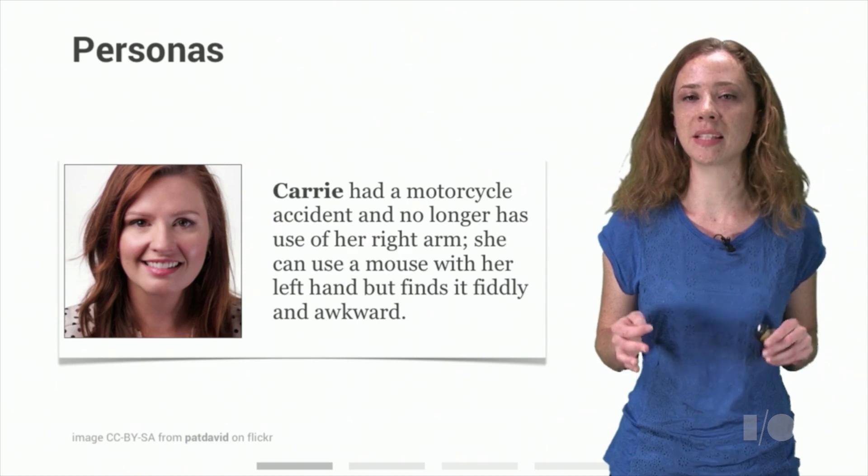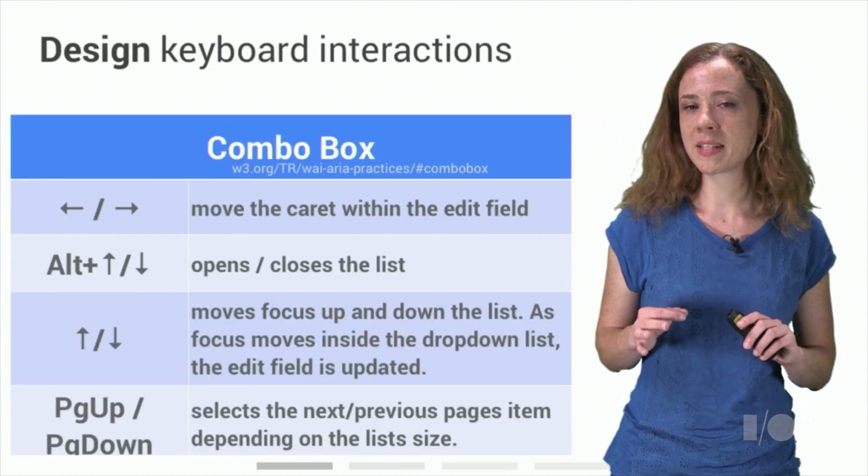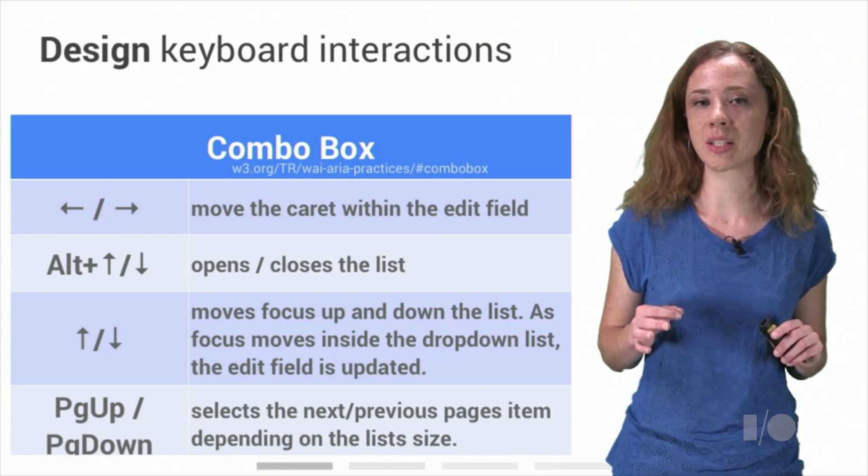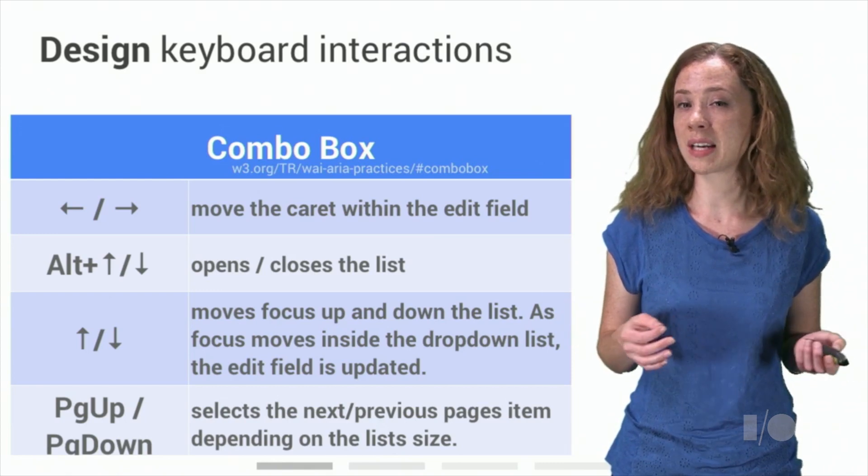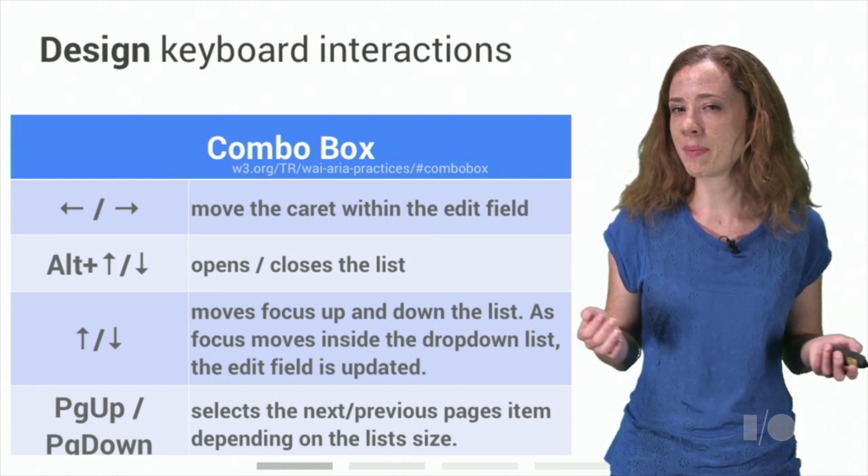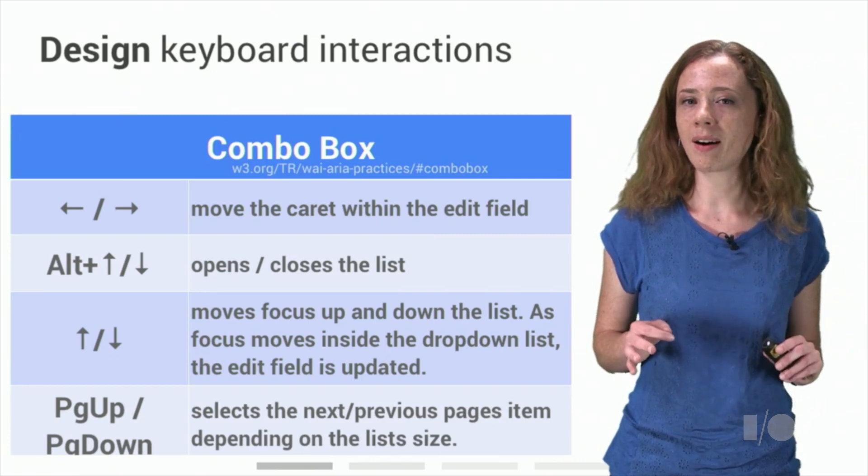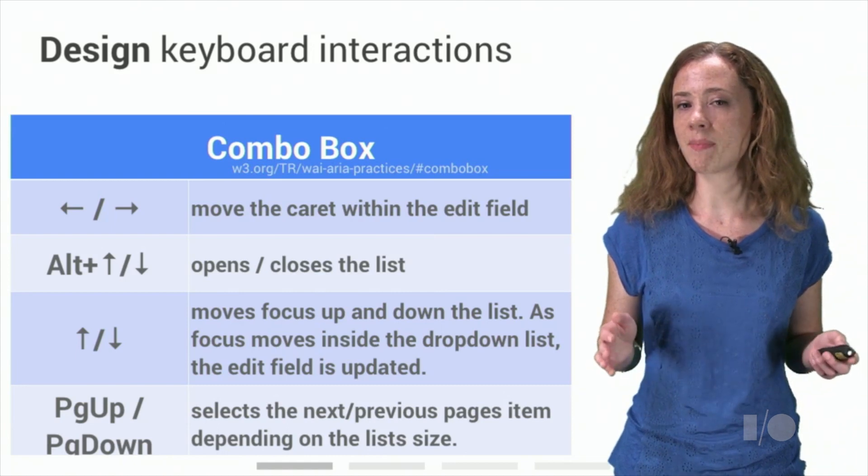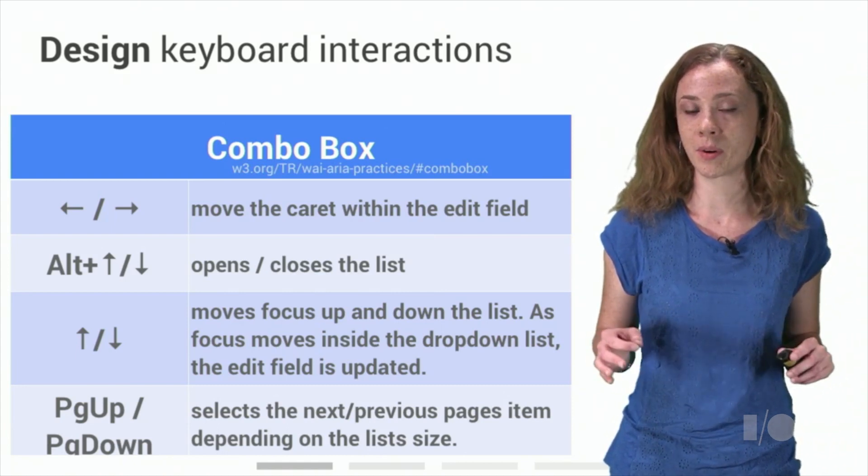To help with the design process, consider including physical impairments in your user experience personas. If you're creating an element which mimics an existing element in some way, consider copying the way it handles keyboard interaction to provide consistency. Try using a native element with the keyboard and find out what already works. Chances are you've been using the keyboard sometimes anyway, so you'll find it comes pretty naturally. Later we'll talk about ARIA, which allows you to specify additional semantics for your element. Once you've picked a semantic role, you can use the ARIA design patterns guide to get some extra advice on what keyboard events to handle.